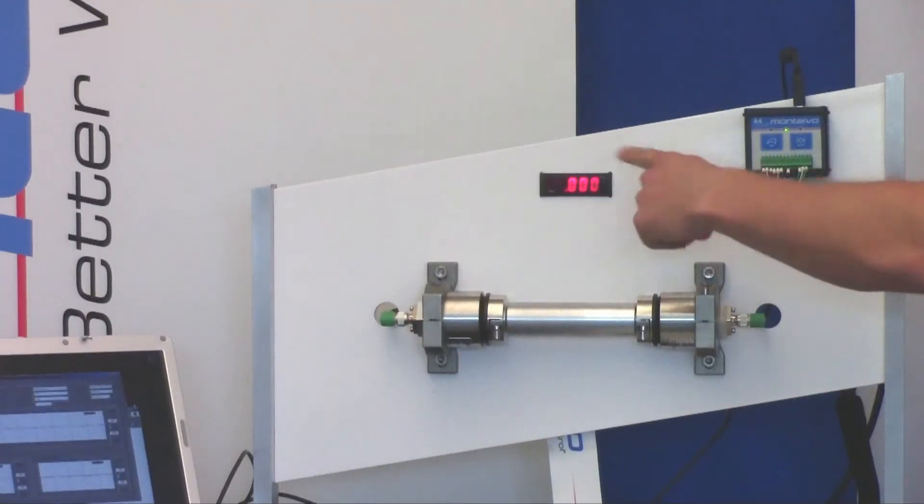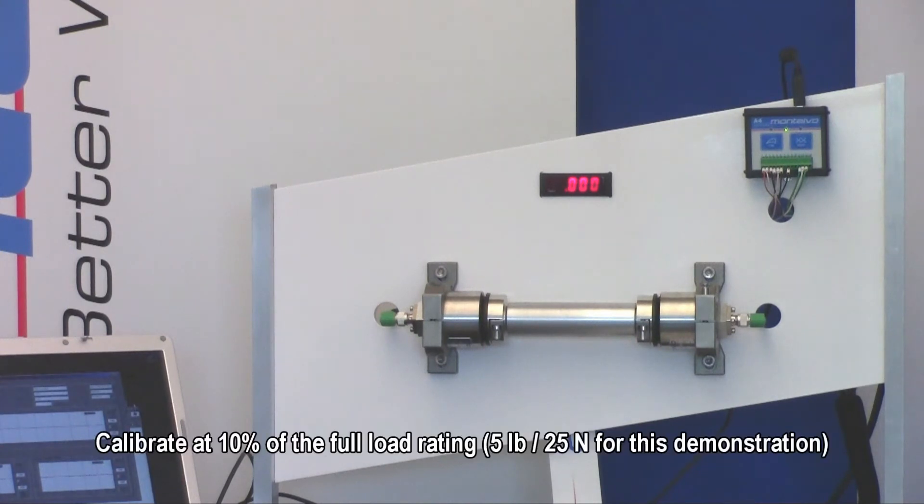Now, I've already run the web around and performed the necessary load cell calibration through the push-button calibration system on the A4, which is 10% of the load cell's load rating, which in our case is five pounds.